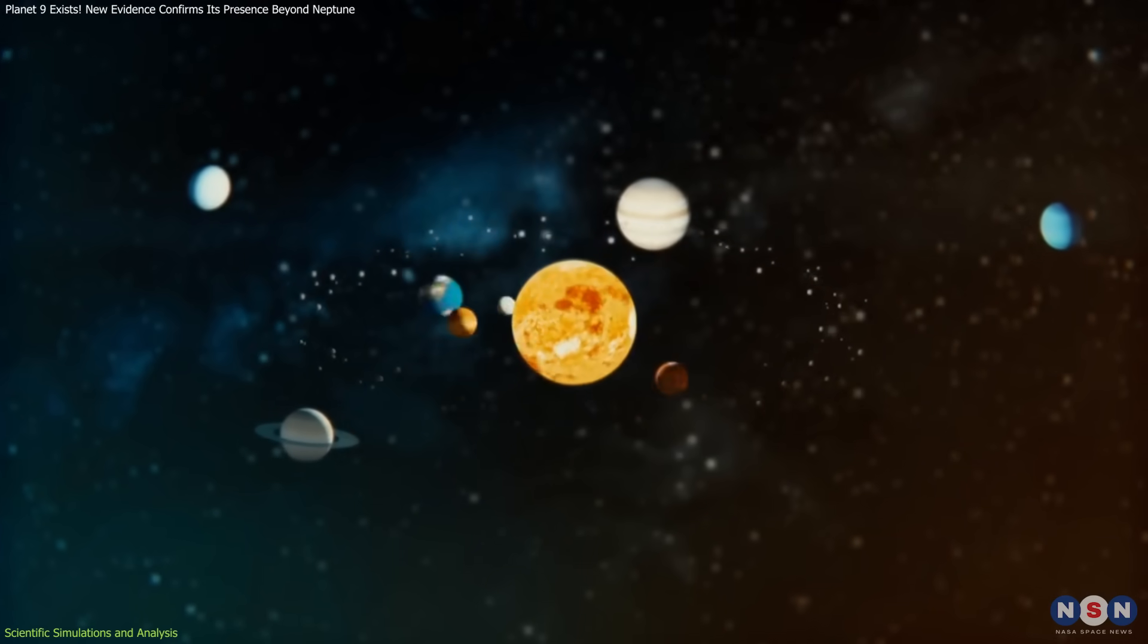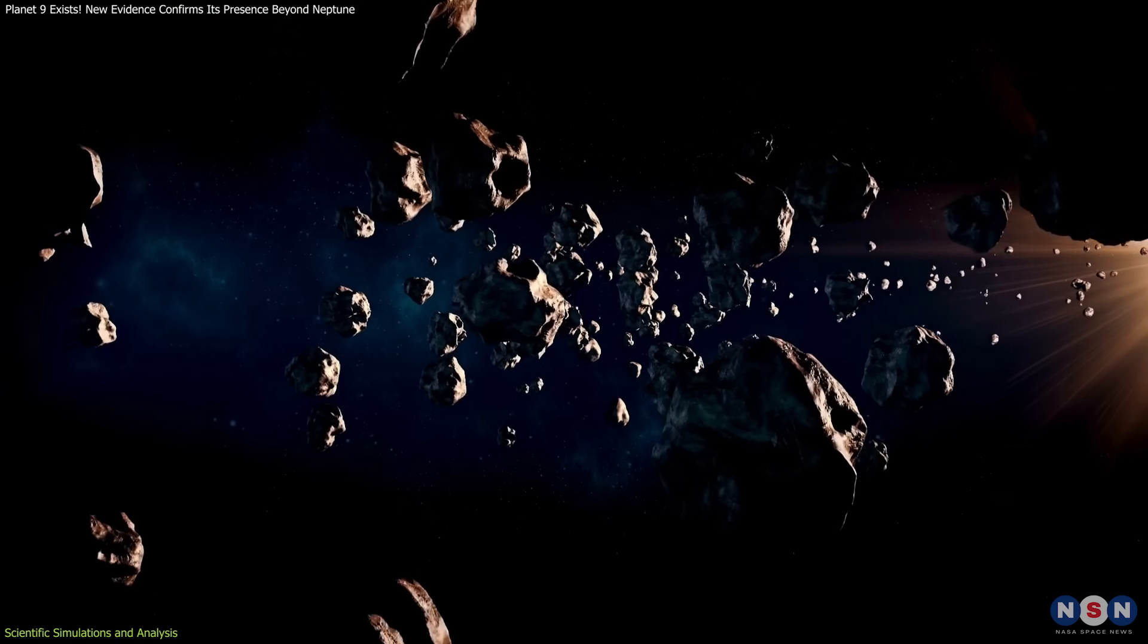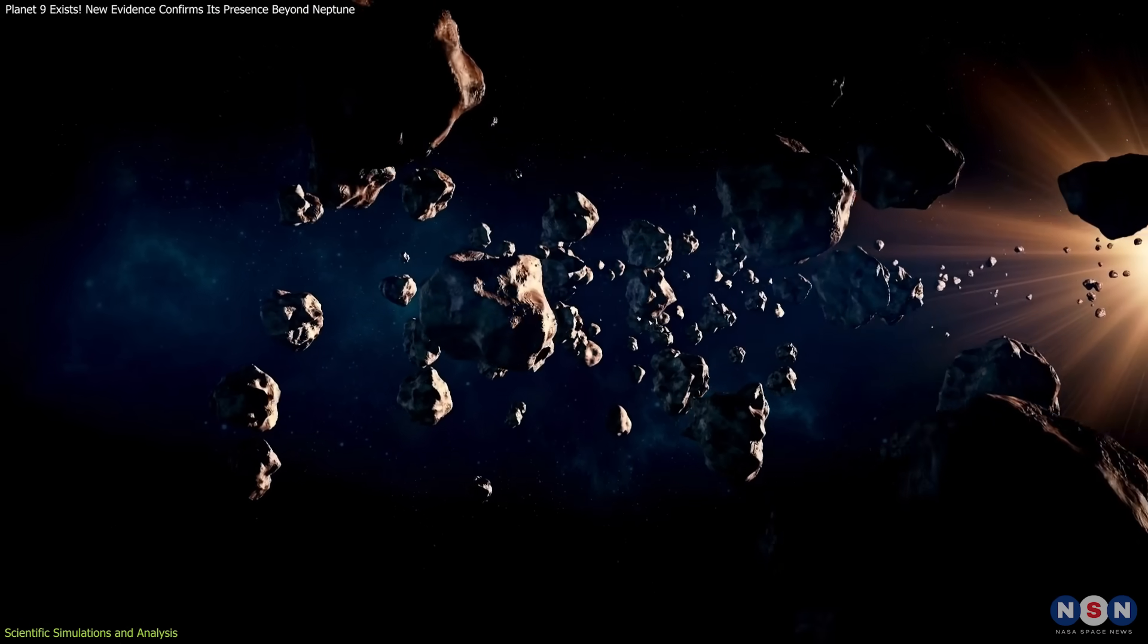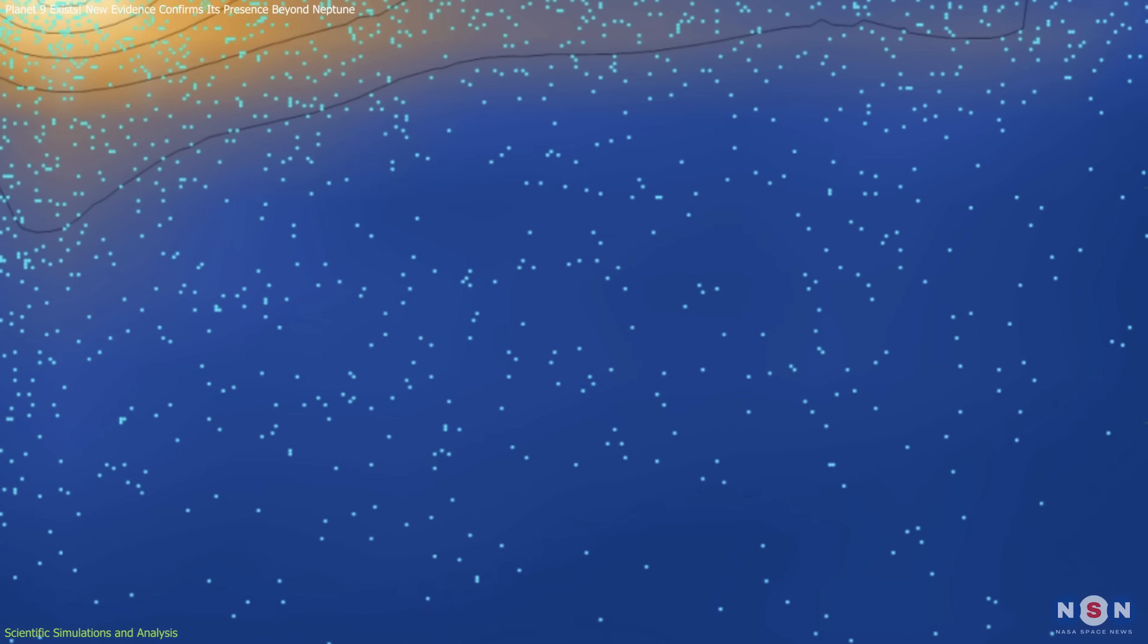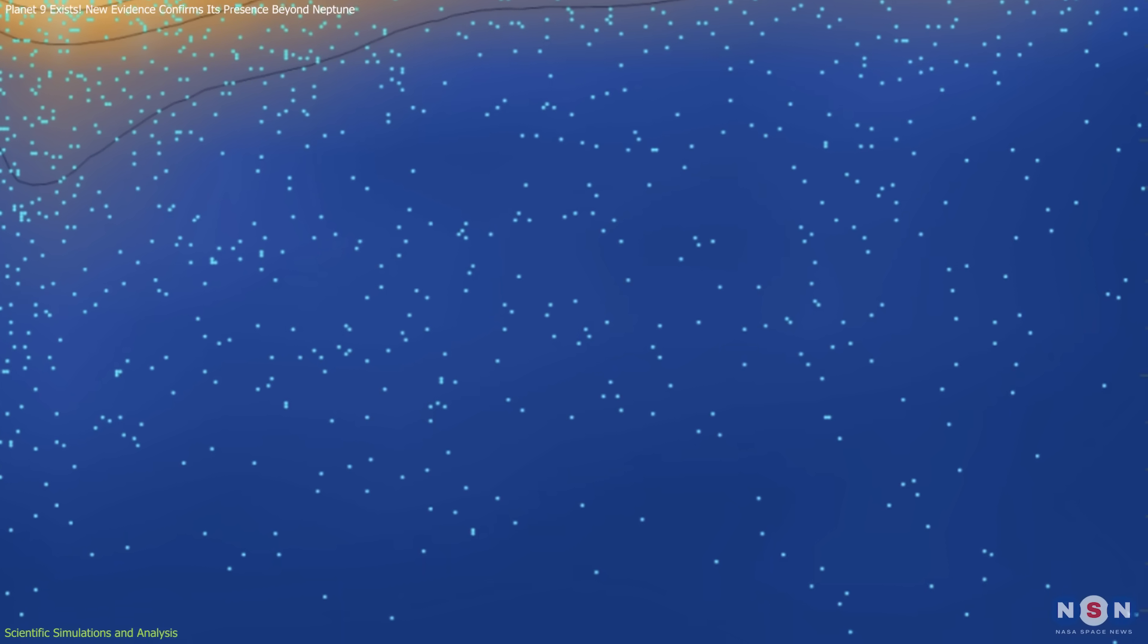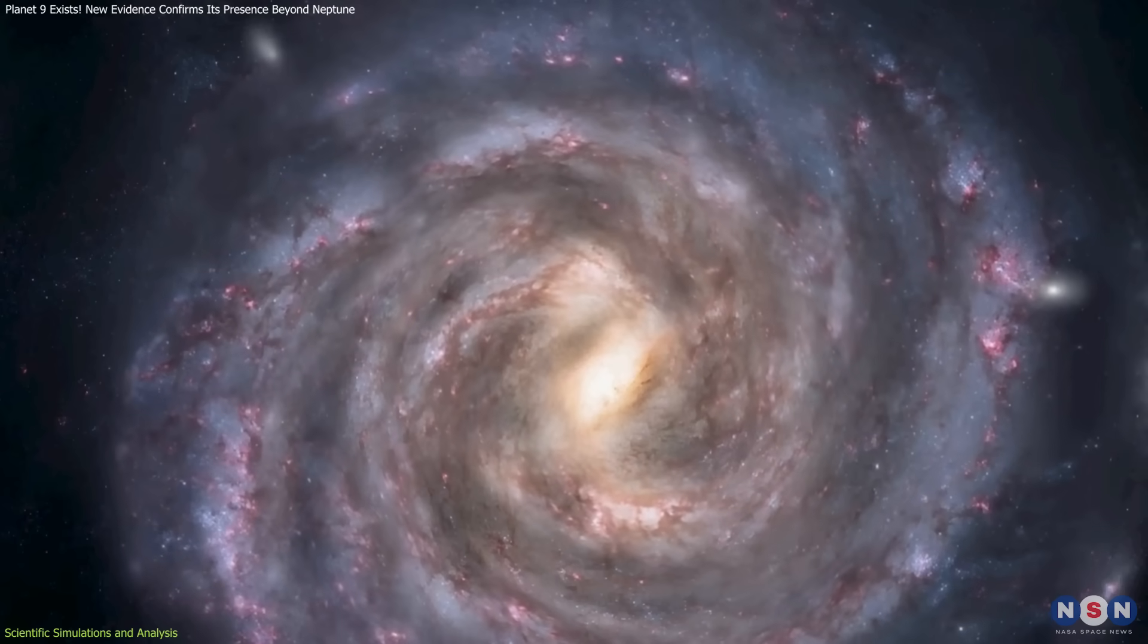In one set of simulations, the researchers modeled a solar system with no Planet Nine and only the gravitational pull of the galactic tide acting on the TNOs. What they found was that under these conditions, the TNOs couldn't be pushed past Neptune's orbit. The galactic tide alone was too weak to explain the orbits we see today.